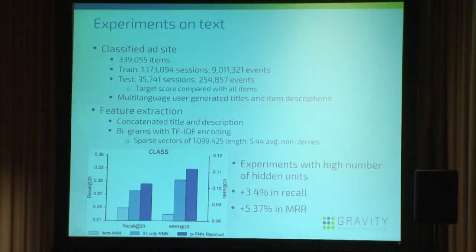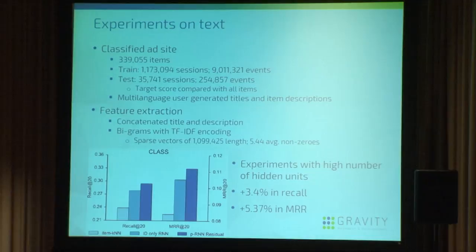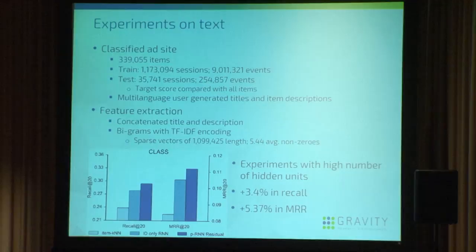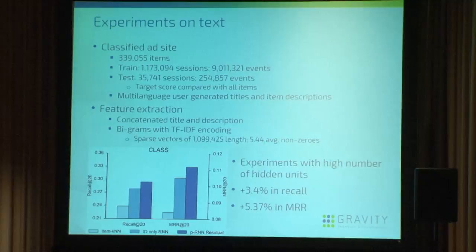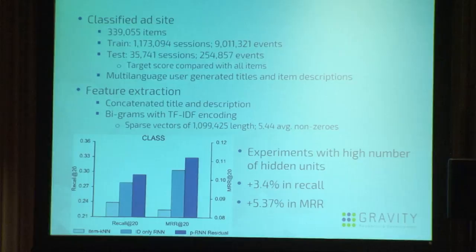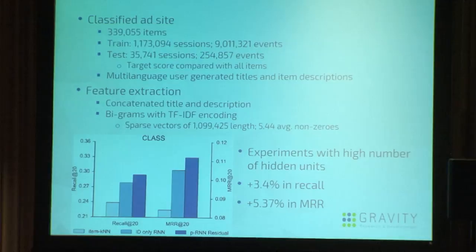We did another experiment with text. For this we used data from a classified site with 300,000 items and 9 million events — a much smaller dataset. Unfortunately, the text was multi-language and user-generated, so it was very noisy and hard to deal with. What worked best for us was extracting unigrams and bigrams with TF-IDF weighting, giving us sparse vectors with more than 1 million values but on average only five to six non-zeros. We achieved around a 3% increase in recall and around 5% increase in MRR.